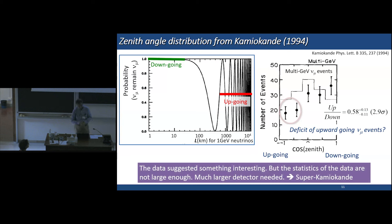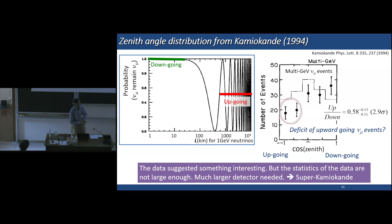The problem was the lack of statistics. Therefore, it was clear we needed a much larger detector, and that was Super-Kamiokande.